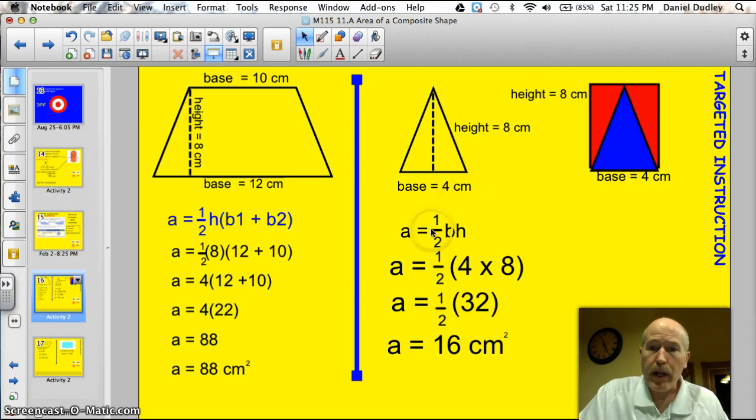The way you find the area of a triangle is 1 half the base times the height. The base here is 4, the height is 8. So we have 1 half times 4 times 8. Base times height. And I'll pause and let you look at that.